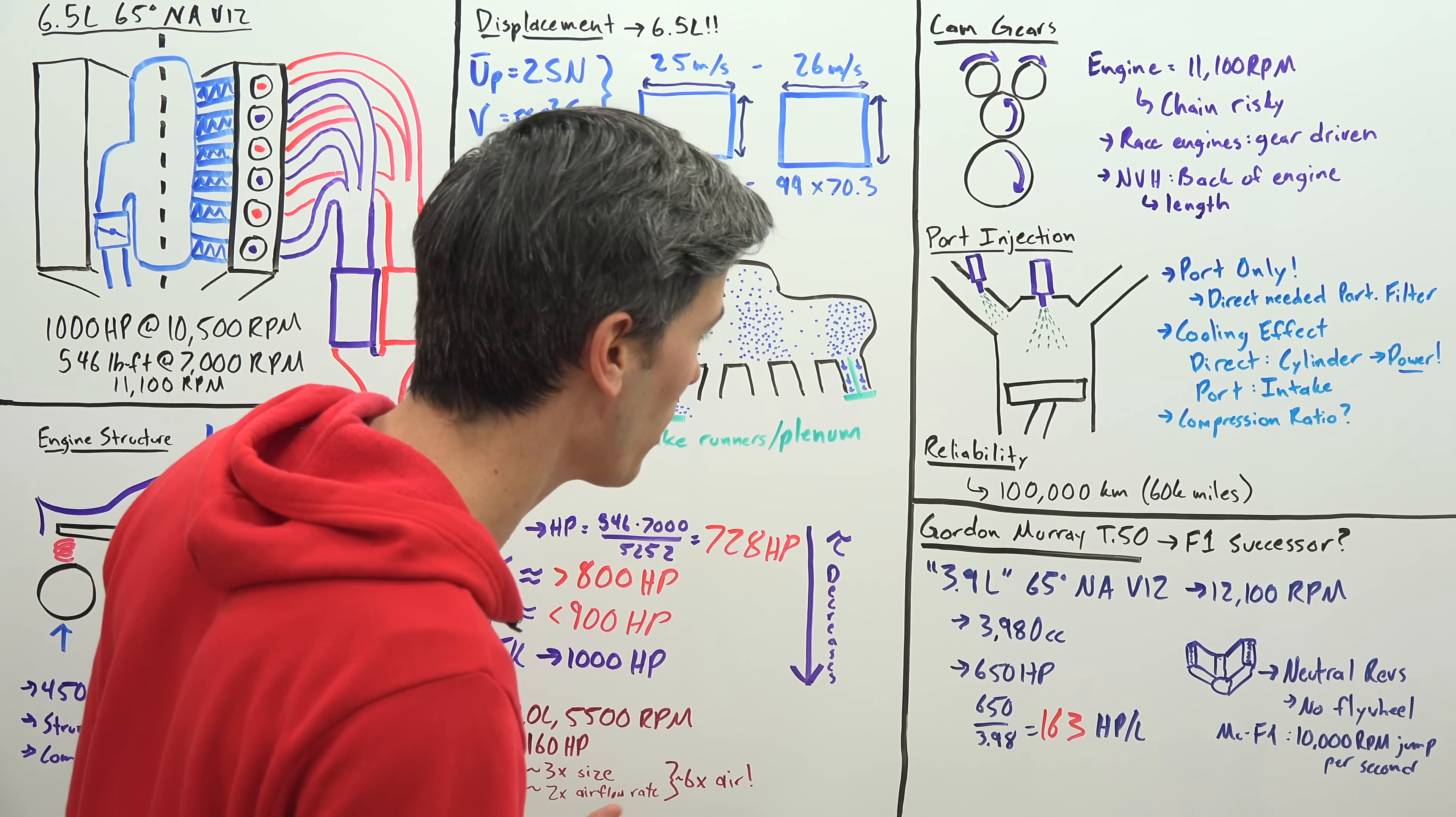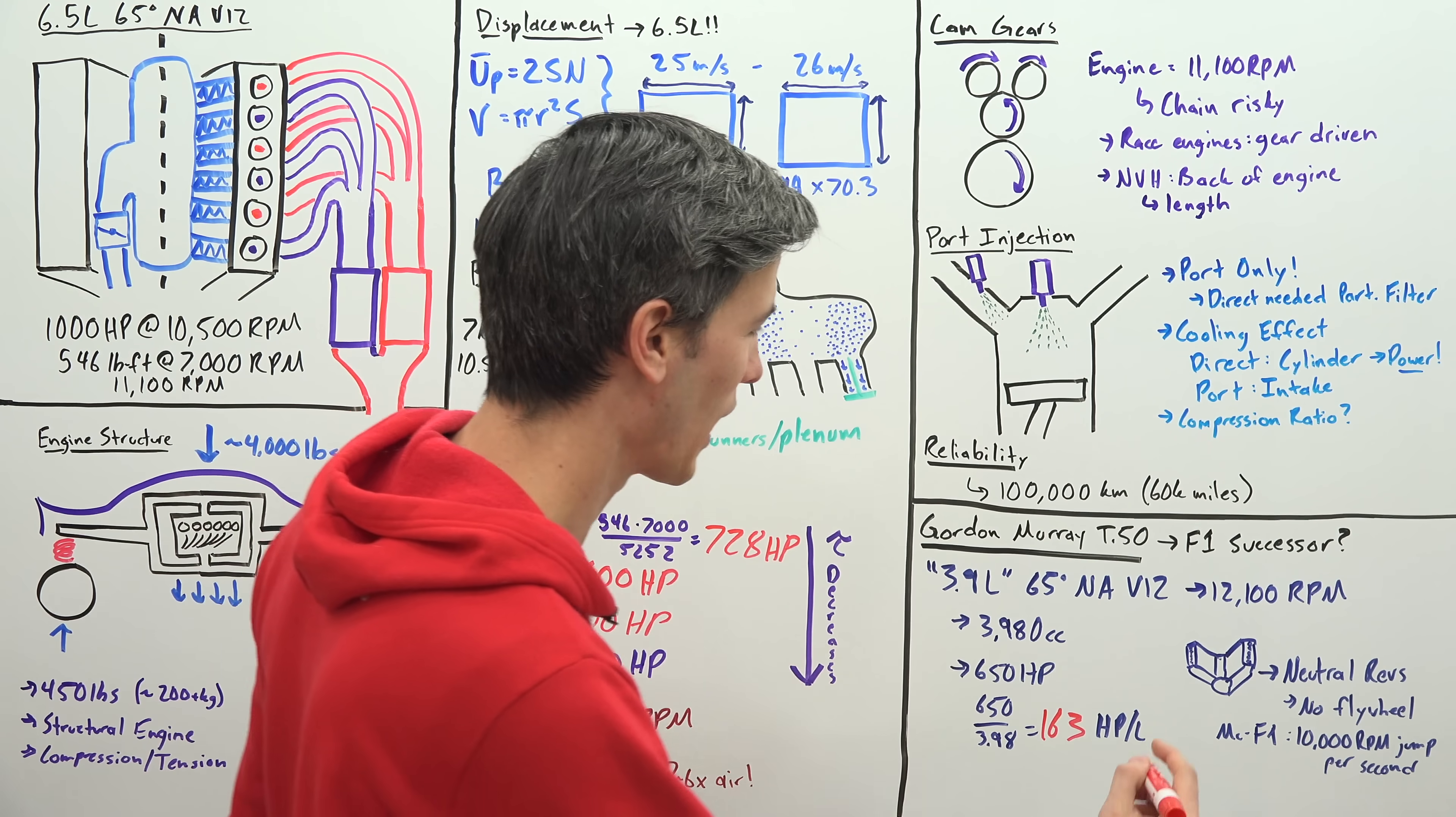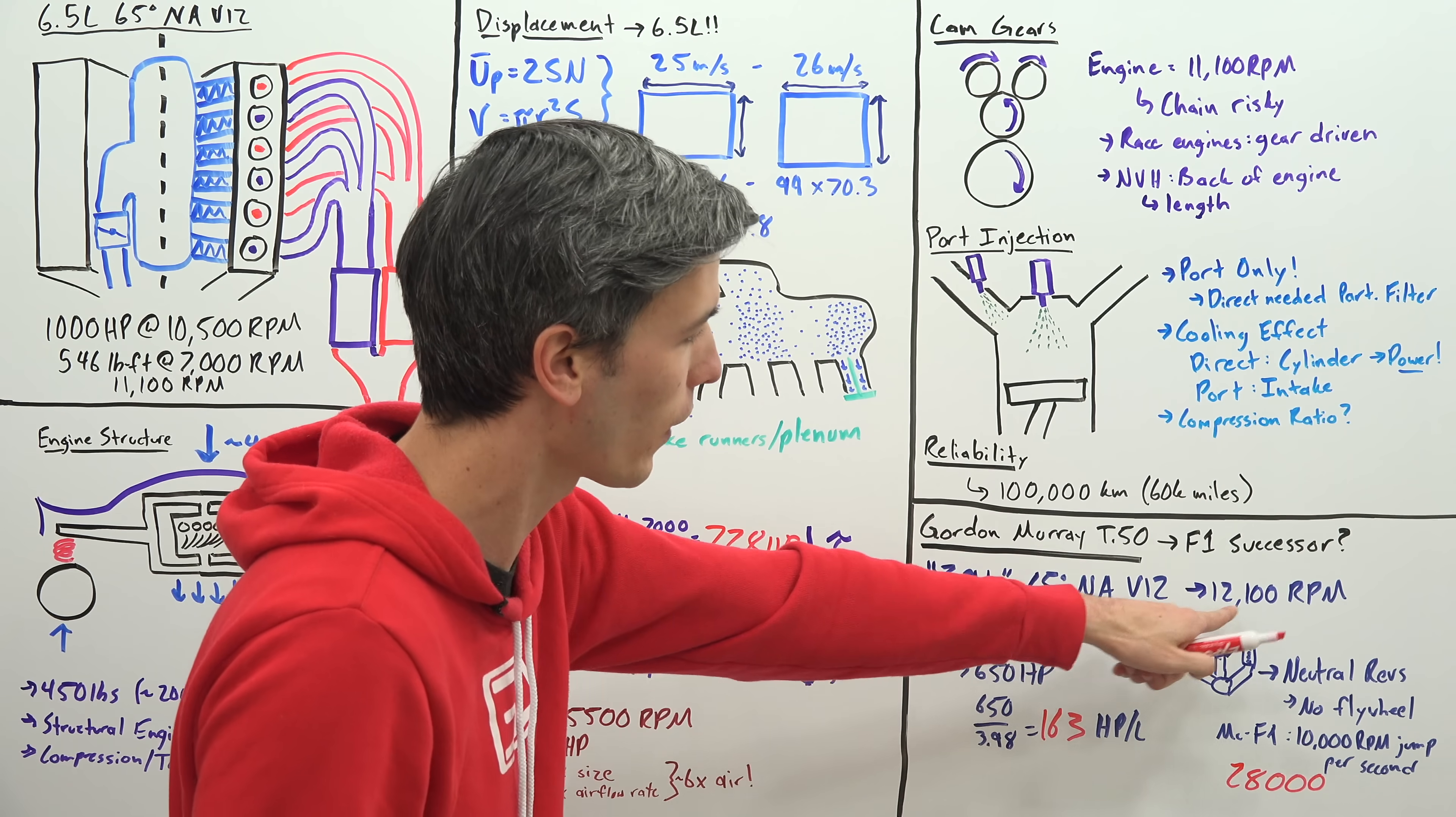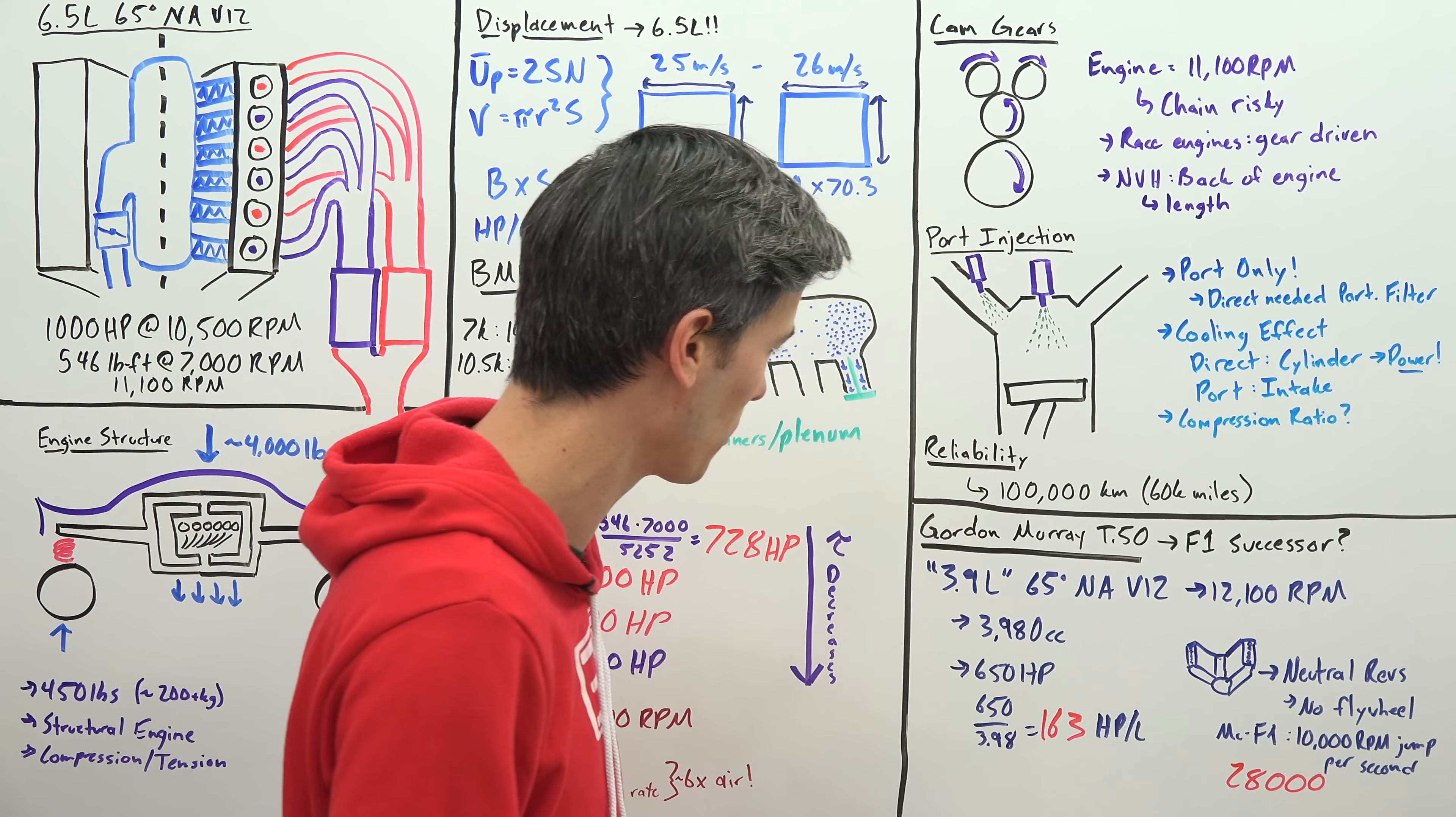There is no flywheel on this engine, just goes straight to the clutch. And so the interesting thing here is that instead of 10,000 rpm jumps per second it is capable of 28,000 rpm per second. Now of course it doesn't rev that high it just revs to 12 but it just means it takes a fraction of a second if it's in neutral to rev up. So it behaves like a really tiny engine as far as how quickly it revs but you know it's a four liter V12, it's nothing to be ashamed of.